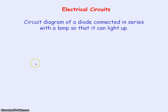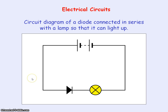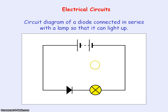The next circuit diagram we're going to look at is connecting a diode in series with a lamp so that it lights up. First we need to look at the direction of the current in this circuit. We look at the cell making our battery — the long line represents the positive terminal and the short line represents the negative terminal. Current flows from positive to negative, so in this case the current is flowing anti-clockwise.